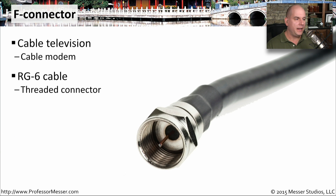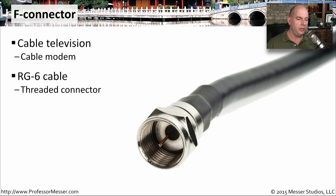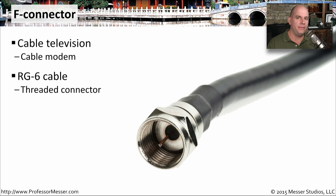We commonly see F connectors on the end of RG6 cable when it's used for television connections, and since that's used by our cable company, we commonly see it for cable modems as well. It's a threaded connector — you can see the threads if you look closely. When putting this onto the connection, you screw it in and sometimes tighten it down, which makes it very difficult for this to accidentally disconnect.